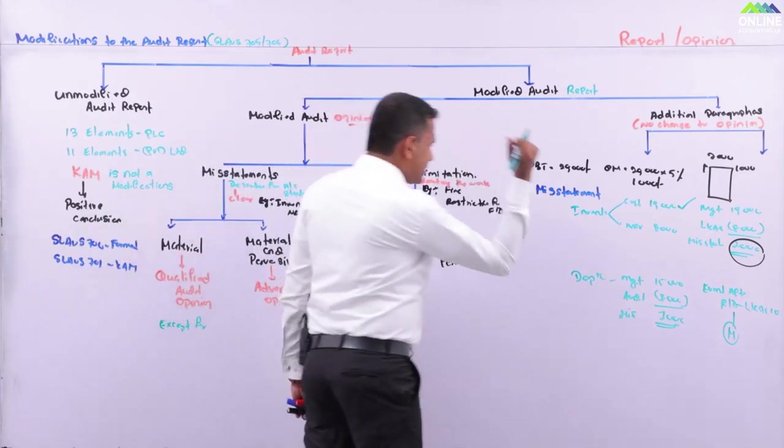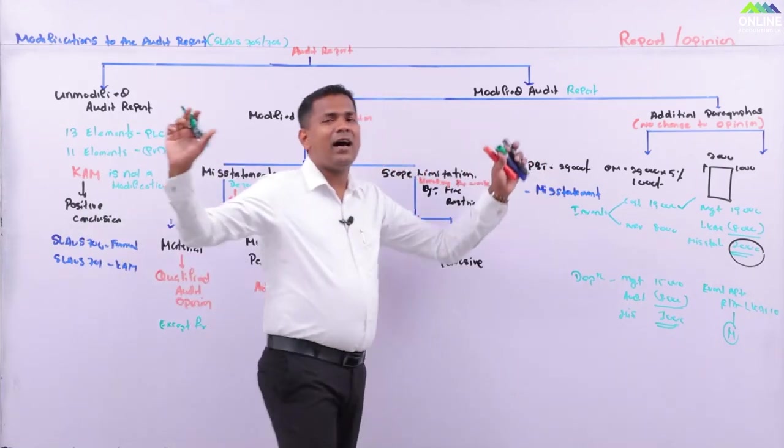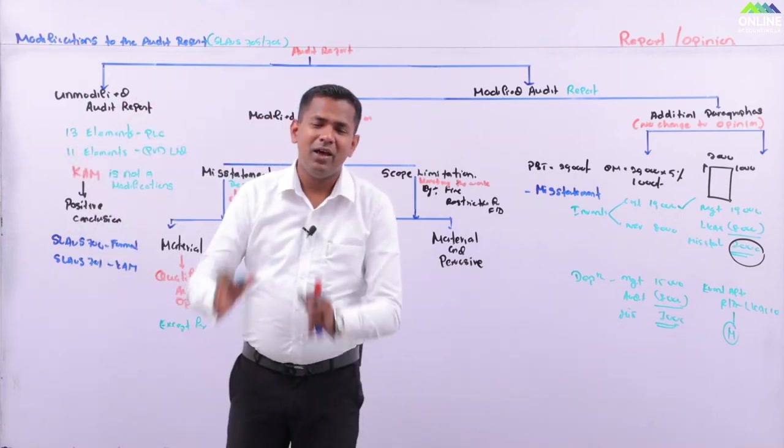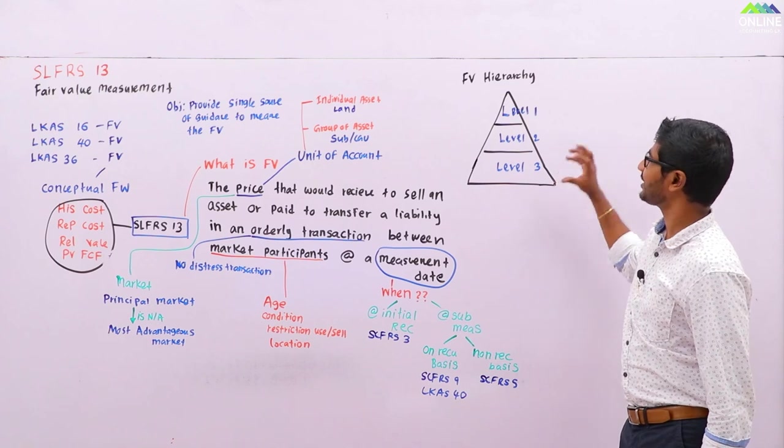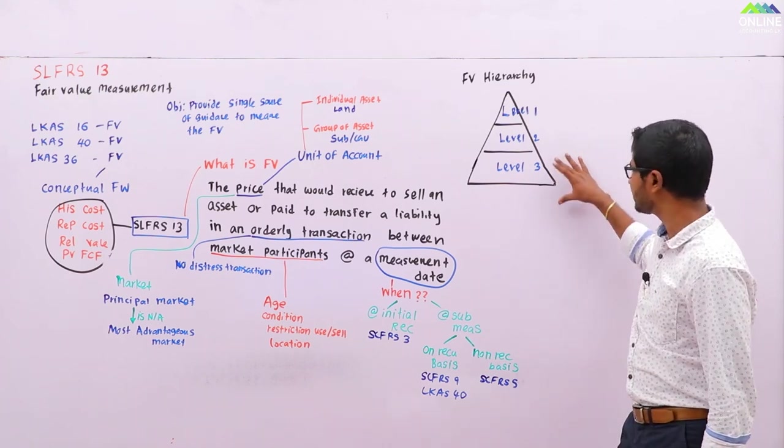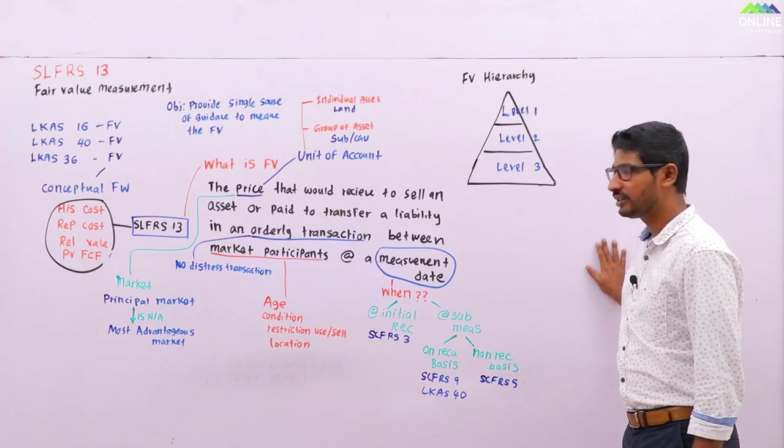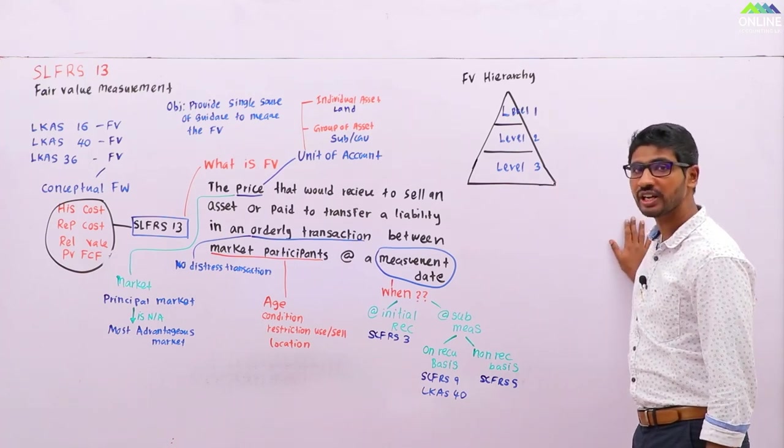Qualified opinion means except for inventory, all others are free from material misstatement and give a true and fair view. You need to understand why this hierarchy is given in this way, with level three down and level one at the top. This shows the disclosure requirements.